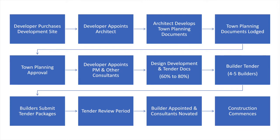A developer then appoints a project manager — sometimes they run it themselves — as well as other consultants. Design development and tender document process commences. The percentage of design development varies depending on how much the developer wants a say in the design; generally it's higher, but a lot of the time it sits between 60 to 80%. Then it goes out to builder tender.